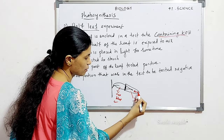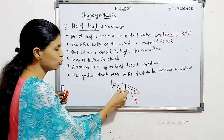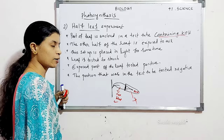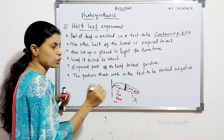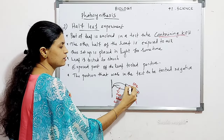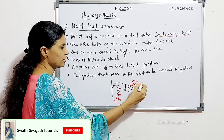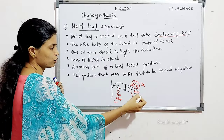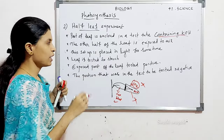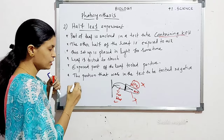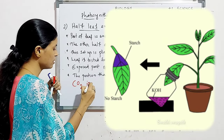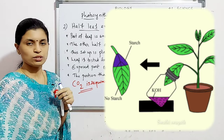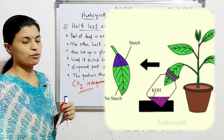The reason is that KOH — potassium hydroxide — absorbs CO2 present inside the test tube. So there is no carbon dioxide available in the enclosed part. This experiment proved that CO2 is required for photosynthesis. The experiment is called the half leaf experiment.